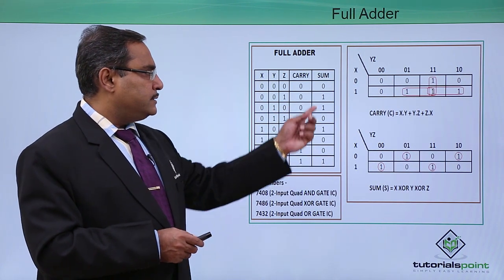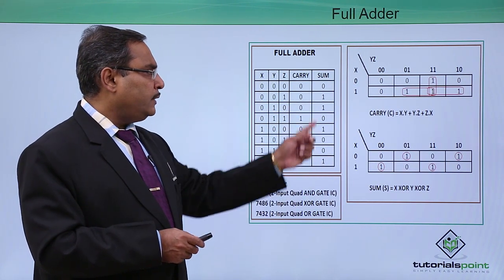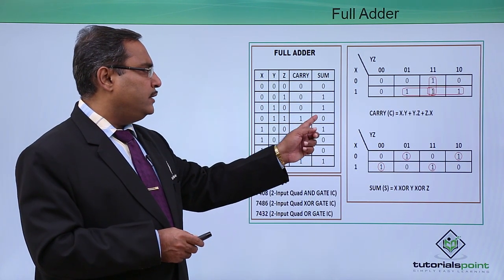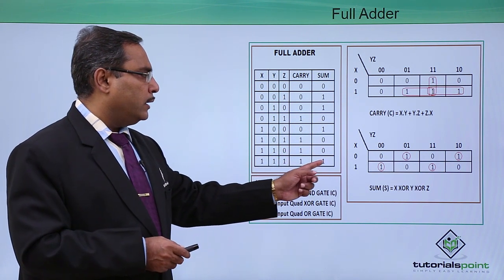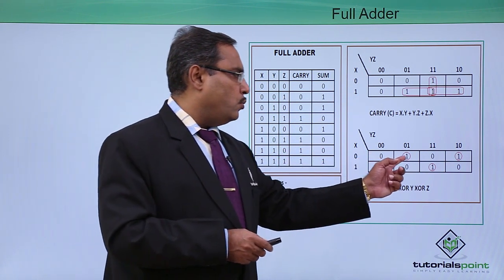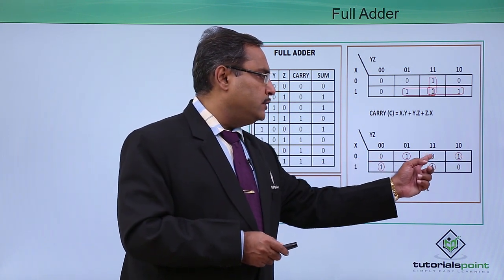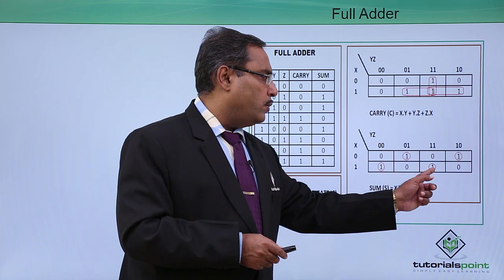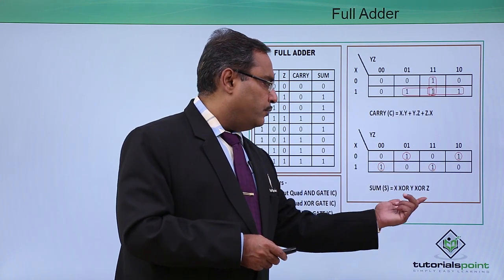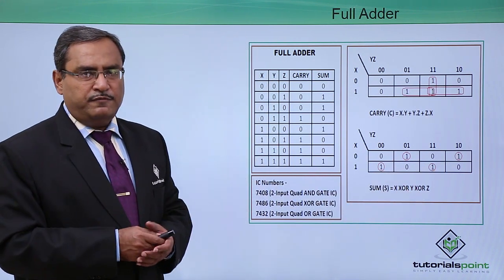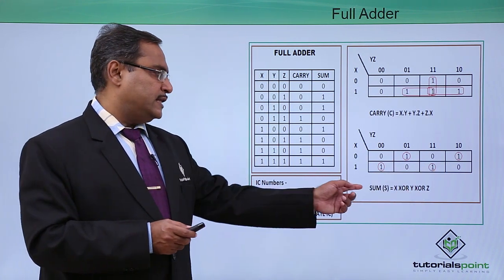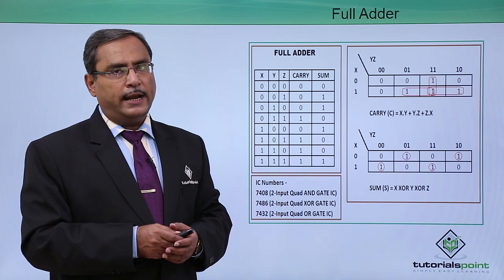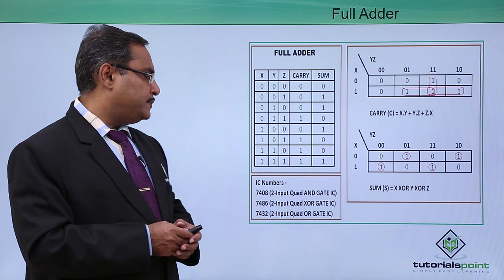Now let us go for the sum. The values are 0, 1, 1, 0, 1, 0, 1, 0. We are plotting: 0, 1, 1, 0, 1, 0, 1. We have obtained this function. These are very famous expressions for the Boolean functions for carry and sum respectively.